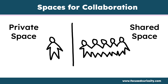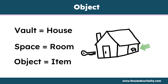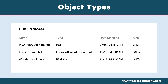The next step down is an object. An object, if you think about it, is like furniture within a room. So an object lives inside of a space, and the space lives inside of your vault. Every object has a type — you can think of PDFs, Microsoft Word docs, and images as examples of object types.